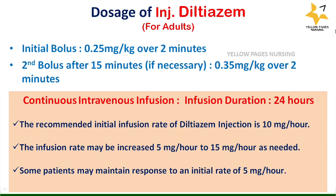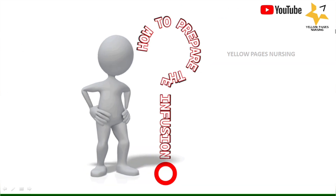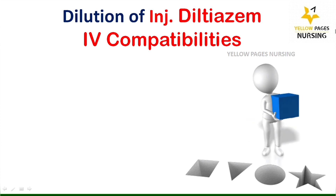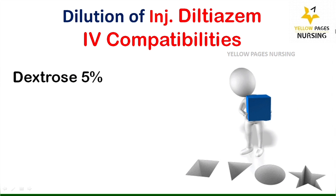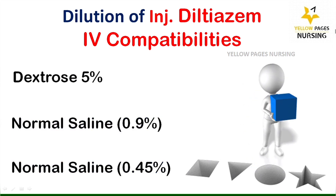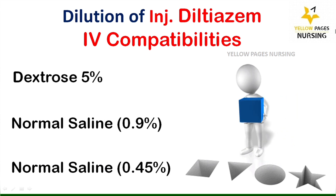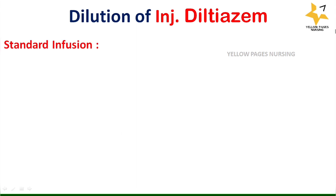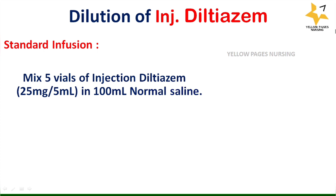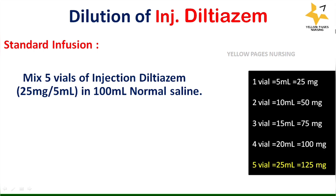Now, how do we prepare the infusion? The IV-compatible solutions for diluting injection diltiazem are dextrose 5%, normal saline 0.9%, and normal saline 0.45%. For a standard infusion of injection diltiazem, we mix five vials of injection diltiazem — that is 25 mg in 5 ml — in 100 ml normal saline.